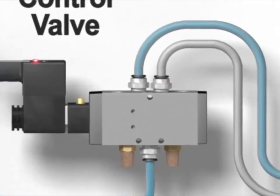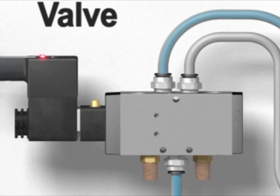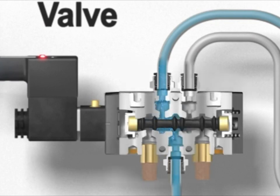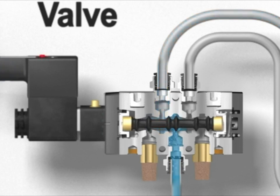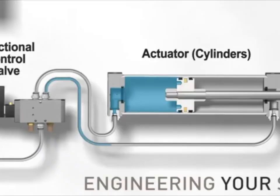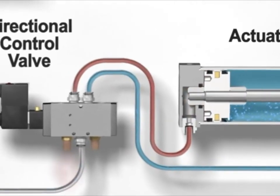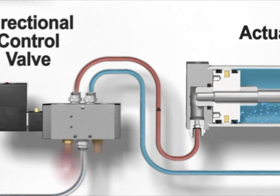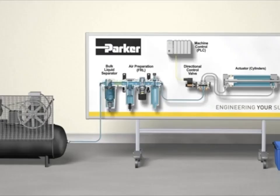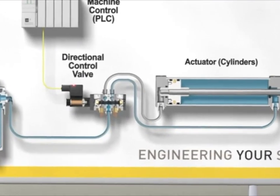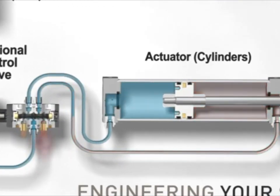Now that we have completed the extension, we need a method to retract the actuator to its original position. The directional control valve achieves this by changing compressed air flow from working port four to working port two, which is connected to the head end of the actuator. When compressed air pushes on the opposite side of the piston, it reverses the direction of the piston rod assembly — a motion referred to as retracting. The air already filling the cylinder exhausts out through the muffler to atmosphere. This system can repeat this process as often as the PLC directs, moving things from point A to point B.